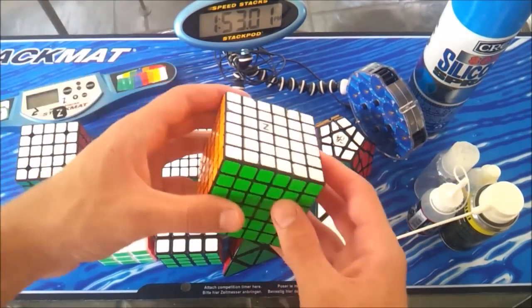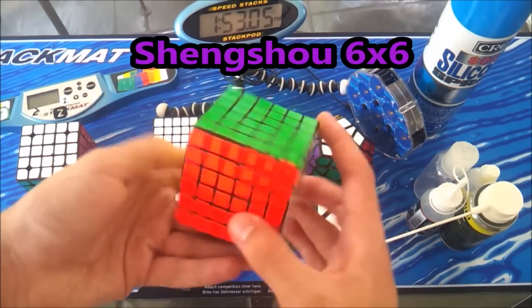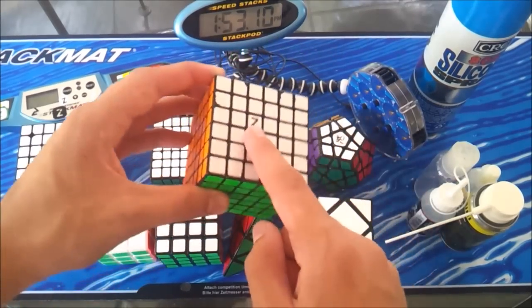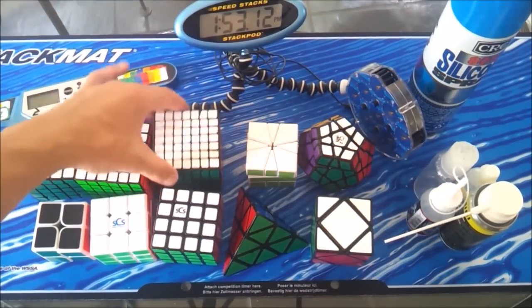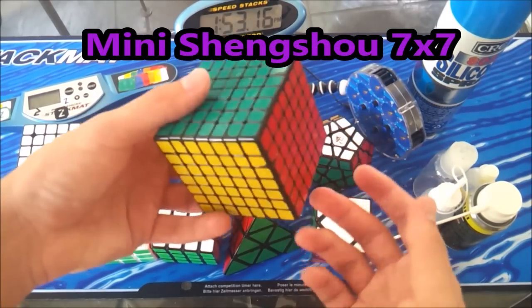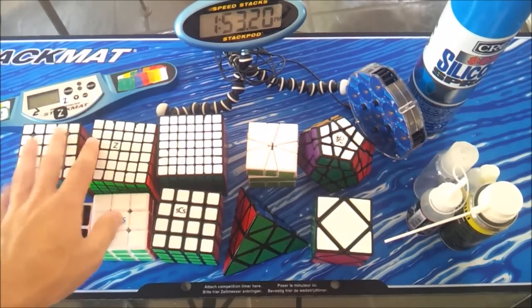The six by six, I use a Shengshou six by six. I think there's Zed stickers, bright Zed stickers, or maybe just regular Zed stickers. I'm not too sure. Zed logo. And for seven by seven, I use a mini Shengshou seven by seven and just standard stickers. So nothing too special or complicated about all those.